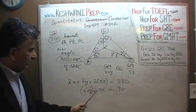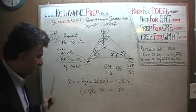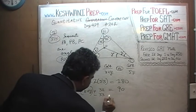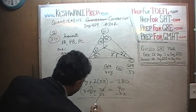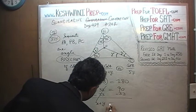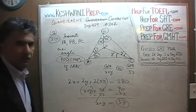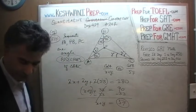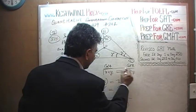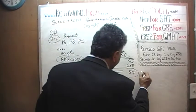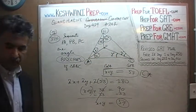We just want to find the value of X plus Y, so we subtract 33 from both sides. We find that X plus Y equals 57. The answer is C.